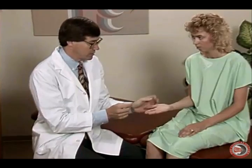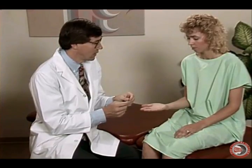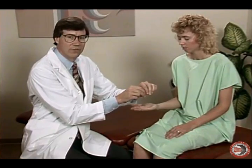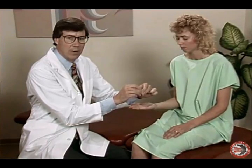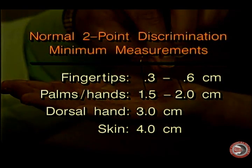Now we check two-point discrimination — determining how close together two objects can be placed on the skin and still be felt as two distinct points. With the patient's palm up and eyes closed, we first apply one point to confirm the patient is responding accurately, then apply two points. Progressively moving the two points closer together, we find the threshold at which the patient can no longer distinguish two separate points, then measure that distance to determine if it's within normal limits.